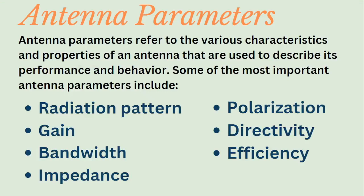If you look at antenna parameters, they refer to various characteristics and properties of an antenna that are mainly used to describe its performance and behavior. Some of the most important antenna parameters include radiation pattern, gain, bandwidth, impedance, polarization, directivity, and efficiency.